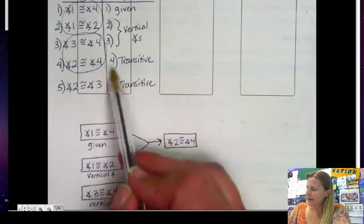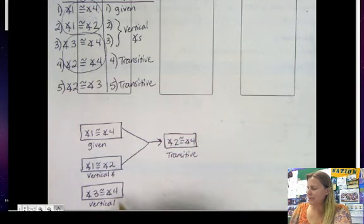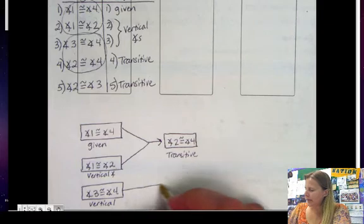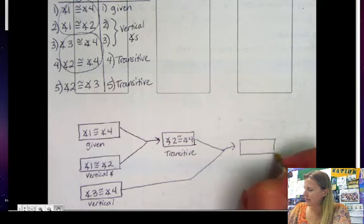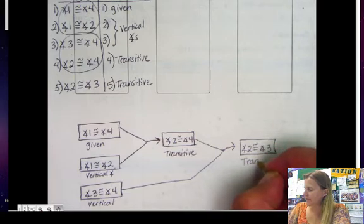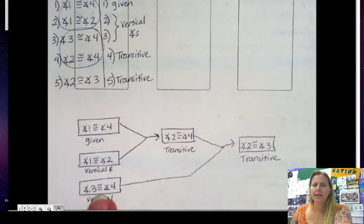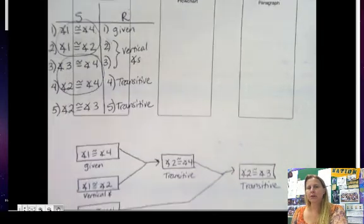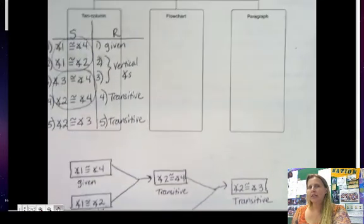Steps 1 and 2 combine to make step 4: angle 2 is congruent to angle 4, reason: transitive. Then we combine boxes for angles 3 and 4, and angles 2 and 4 together to get the final statement: angle 2 is congruent to angle 3, reason: transitive. The nice thing about a flowchart proof is you really see how things are connected. In some instances it's easier to understand than a two-column proof, though two-column proofs are more common in geometry.